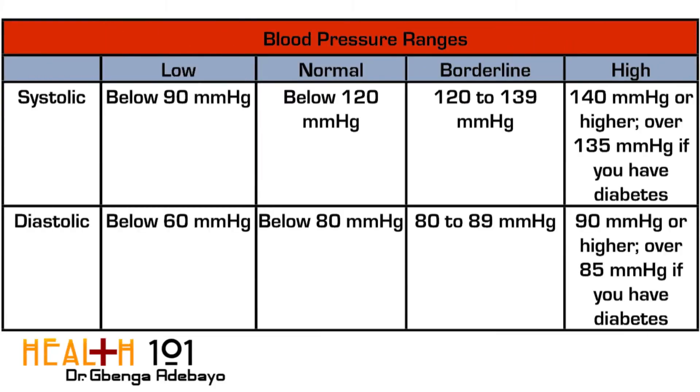The lower one, which we call diastolic pressure, is the pressure in the pipeline system that takes blood around your body when your heart is relaxed. So: contracting, relaxed — contracting, relaxed. The systolic pressure, the pressure on top, should not be more than 120. If it's more than 120, you need to see your doctor. The value below — the 80 — is the pressure when your heart is relaxed, and hence the pressure in the pipeline around your body is also lower.